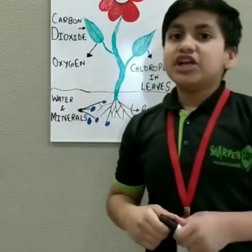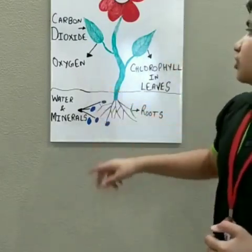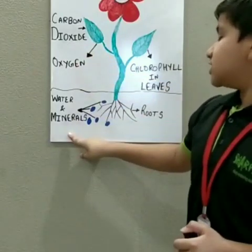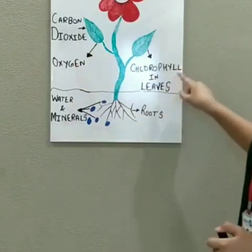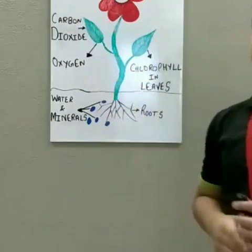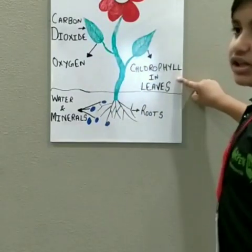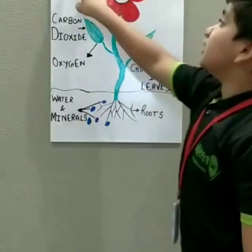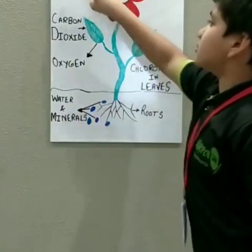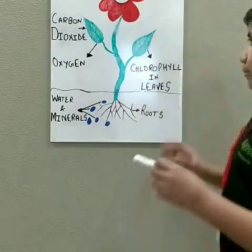Photosynthesis is the process in which the plants make their own food with the help of carbon dioxide, water, and minerals in the presence of chlorophyll and sunlight. Now what happens is the chlorophyll that is present in the leaves helps in trapping the sunlight that is falling on the leaves. It helps in trapping it.